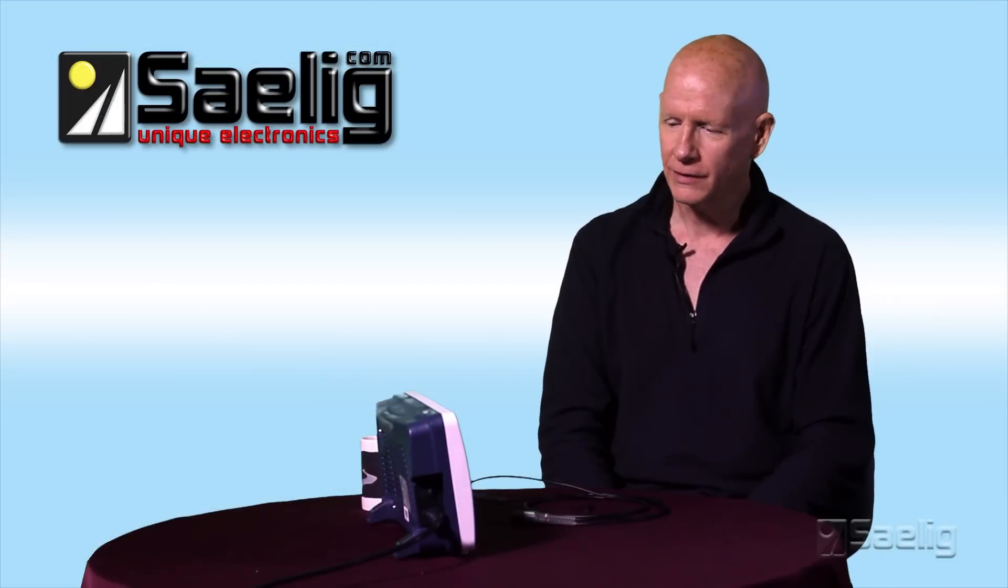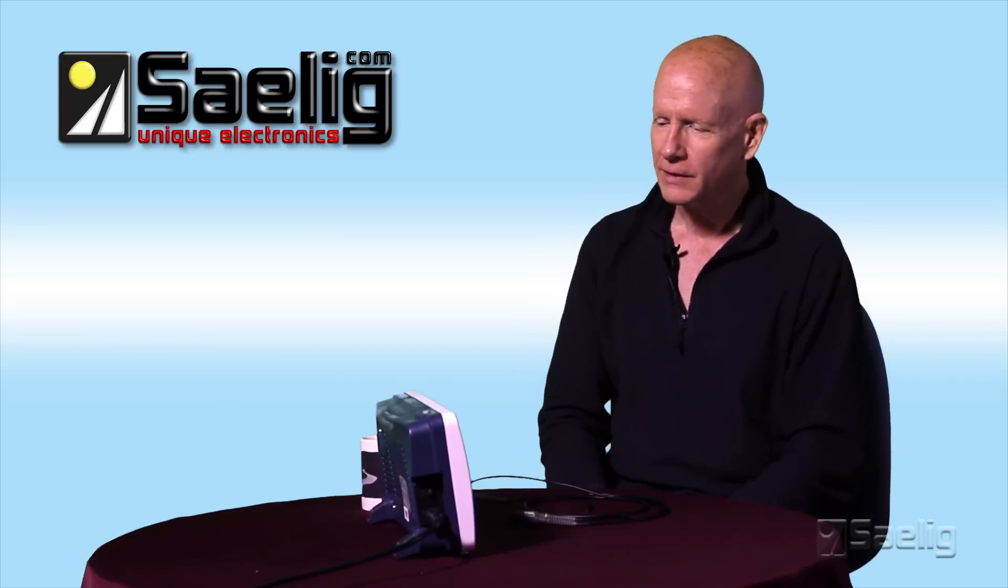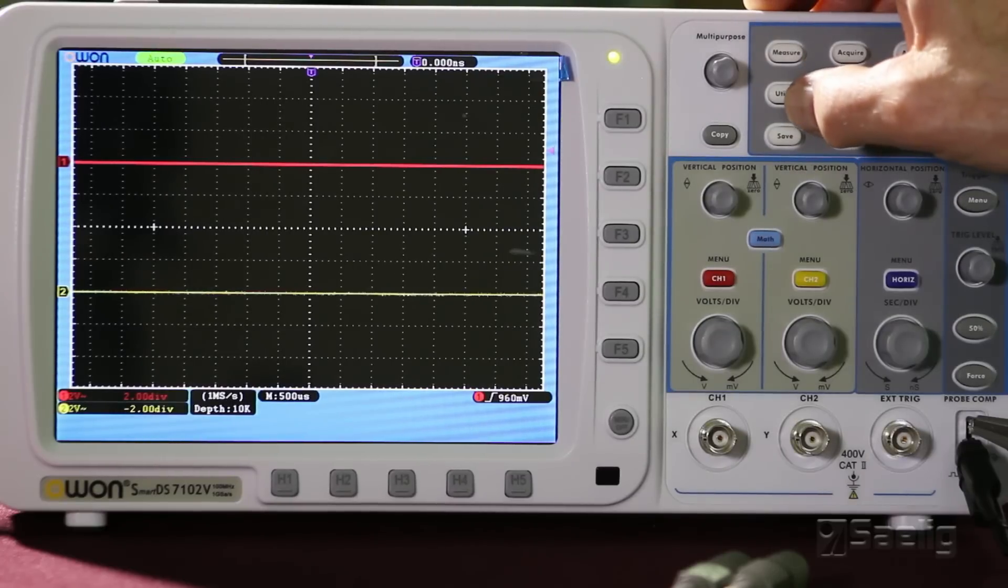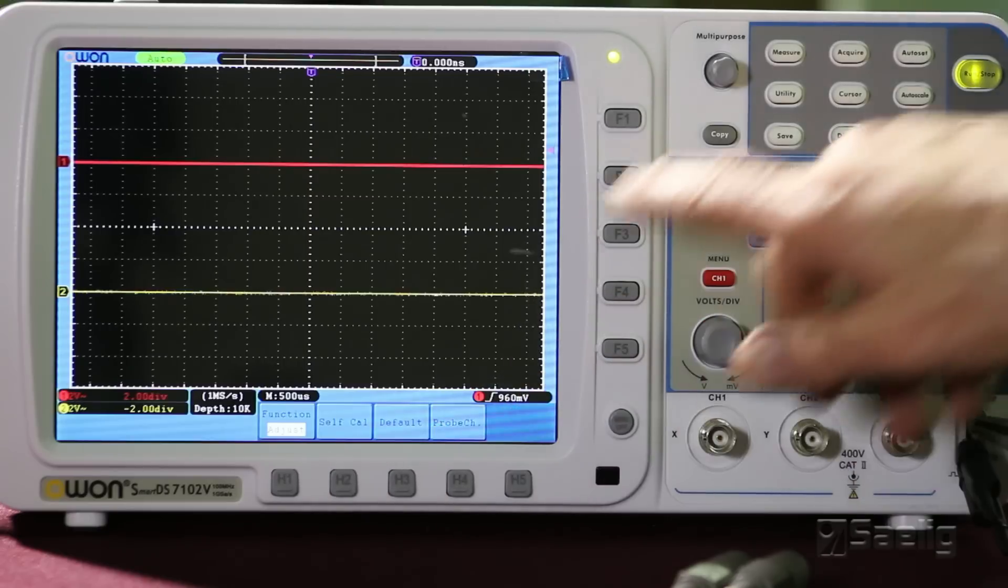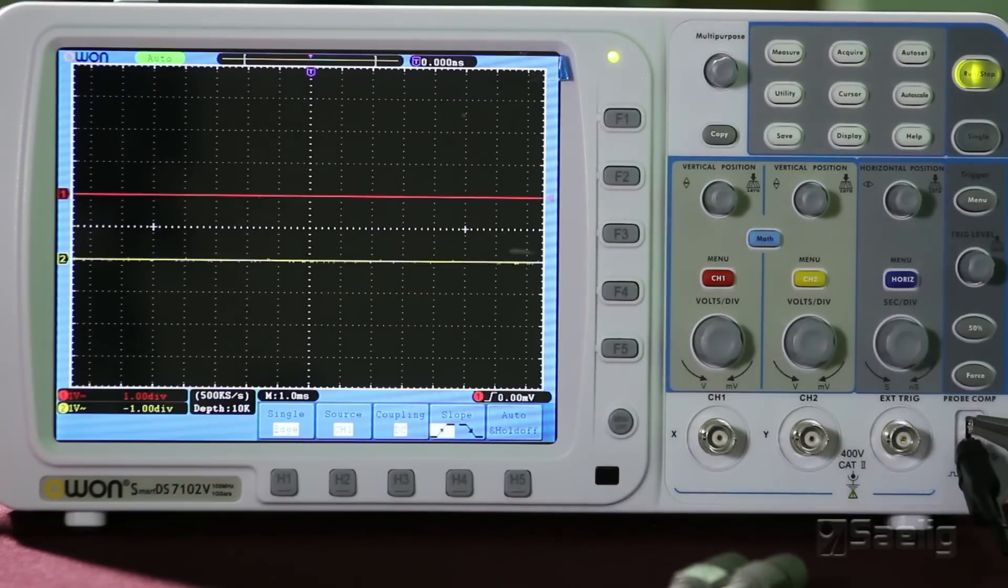So, the first thing we were going to do after we established that power on self-test was working properly, we were going to look and see if we could set factory defaults. Now, some scopes will have a default button, others will have it buried somewhere in the menus like this one does. This one has it under the utility key and I'm just going to hit defaults right here and get the scope to assume all the settings that it comes right out of the box.